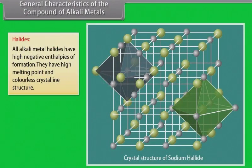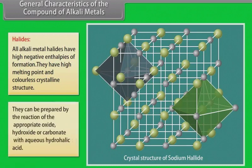Halides. All alkali metal halides have high negative enthalpies of formation. They have high melting point and colorless crystalline structure. They can be prepared by the reaction of the appropriate oxide, hydroxide or carbonate with aqueous hydrohalic acid.